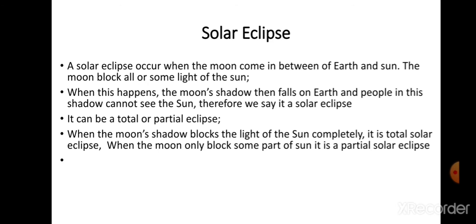The Moon blocks all or some of the sunlight from the Sun. When this happens, the Moon's shadow then falls on Earth, and people in this shadow cannot see the Sun. Therefore, we say it is a solar eclipse.